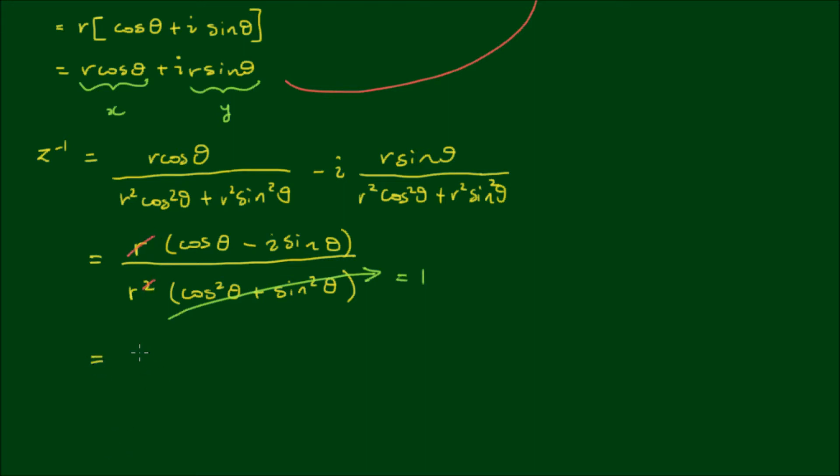Then the multiplicative inverse works out to be 1 over r times (cos θ minus i sin θ). So the inverse of z is simply 1 over r times (cos θ minus i sin θ).